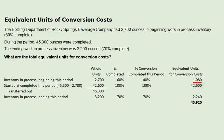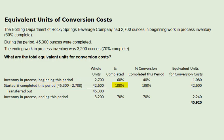The next group of inventory are the ones that are started and completed this period. The number of units started and completed this period is calculated by taking 45,300 — the number of units completed during the period — minus the beginning work-in-process inventory of 2,700, which comes out to 42,600. Because these units were started and completed this period, 100% is completed. So 100% times 42,600 gives us 42,600 equivalent units for conversion costs.